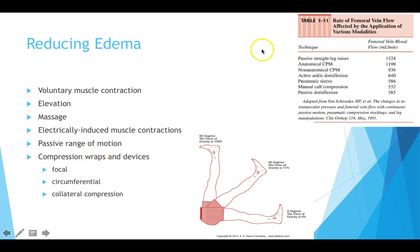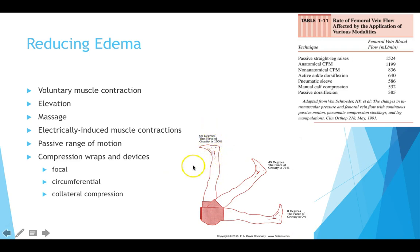We can do this with compression wraps and ACE wraps. There are also pneumatic compression devices like game readies, where we pump air or water into a sleeve to create that pressure. There's debate on whether one is better than the other. These can have different chambers — more pressure in one area and less in another — or they can pump sequentially, pushing fluid up in stages.